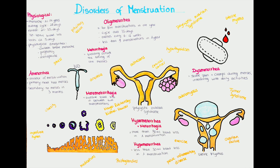The last menstrual disorder we will talk about is dysmenorrhea — menstruation with severe pain and cramps. A certain amount of pain is normal during menstruation, but if it is debilitating and interfering with daily activities, it is considered dysmenorrhea. Dysmenorrhea is divided into primary and secondary. Primary dysmenorrhea is when the menstruation itself causes the severe pain; it usually occurs shortly after menarche and lasts until menopause. It is thought to be due to increased prostaglandin synthesis causing painful uterine contractions, and prostaglandins can also cause blood perfusion disorder of the myometrium, increasing pain.